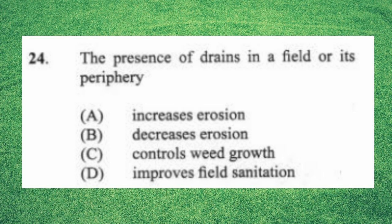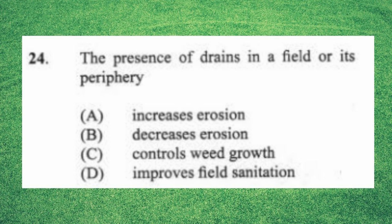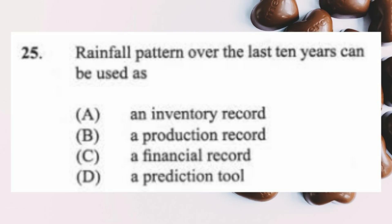Question 24: The presence of drains in a field or its periphery (a) increases erosion, (b) decreases erosion, (c) controls weed growth, (d) improves field sanitation. The answer is B, decreases erosion. When drains are placed in or around a field, they remove excess water from the soil. Drains are used to control water erosion.